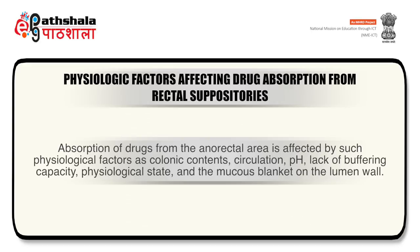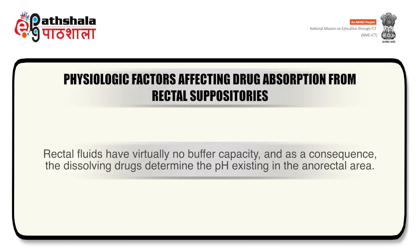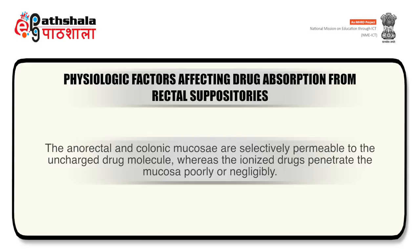Absorption of drugs from the anorectal area is affected by physiological factors such as colonic contents, circulation, pH, lack of buffering capacity, physiological state and the mucus blanket on the lumen wall. The pH of the rectal mucosa plays a significant rate-controlling role in drug absorption. Rectal fluids have virtually no buffer capacity, and as a consequence the dissolving drugs determine the pH existing in the anorectal area.